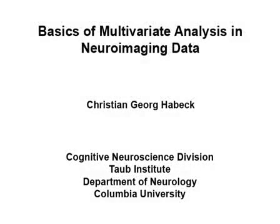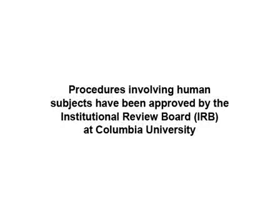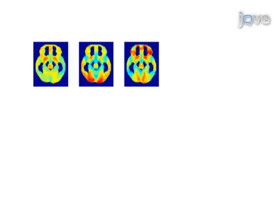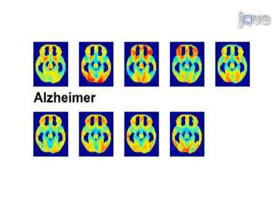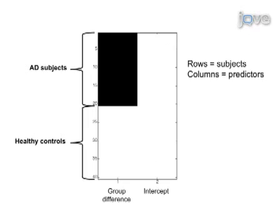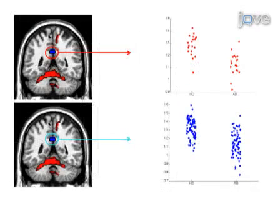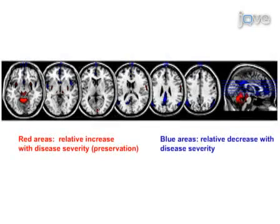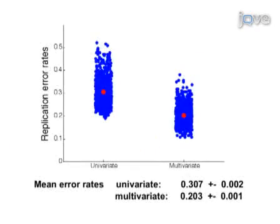This video demonstrates and compares multivariate and univariate analysis techniques for neuroimaging data with applications to Alzheimer's diagnosis. Brain activity from 20 early Alzheimer's patients and 20 age-matched healthy controls is contrasted. SPM is used to identify the brain region showing the largest relative deficit in FDG PET signal in Alzheimer's patients relative to controls. For the multivariate analysis, principal components analysis with linear discriminant analysis is used to derive the marker. Results indicate that the multivariate marker provides better diagnostic performance and superior generalization to independent data.